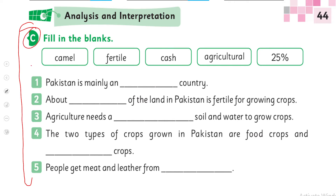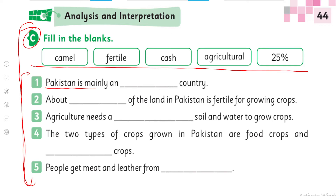The words are given here — with the help of these words you will fill in the blanks. Pakistan is mainly an agricultural country. About 25 percent of the land in Pakistan is fertile for growing crops.